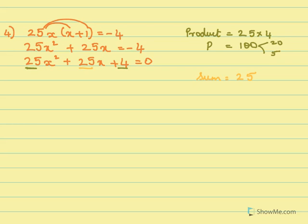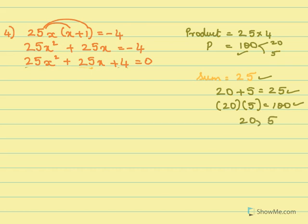We know 20 times 5 is 100 and 20 plus 5 equals 25, which is exactly the sum we needed. When we multiply 20 and 5 we get 100, the required product. So our factors are 20 and 5. We split 25x into 20x plus 5x, giving 25x square plus 20x plus 5x plus 4 equals 0.